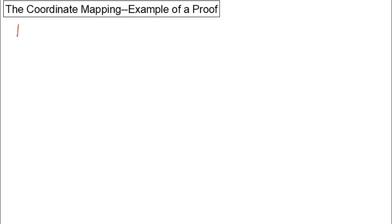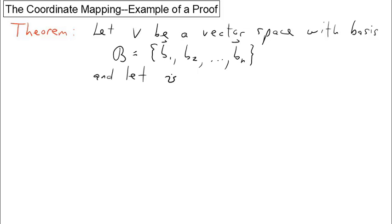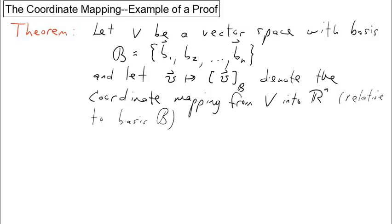In this video, we'll do an example of a proof involving the coordinate mapping. In particular, we'll prove the following theorem. Let v be a vector space with basis script b equals b1, b2, all the way down to bn. Let's denote the coordinate mapping relative to b as follows: the vector v gets mapped to another vector v sub b in Rn. This vector on the right contains the b coordinates of our vector v.